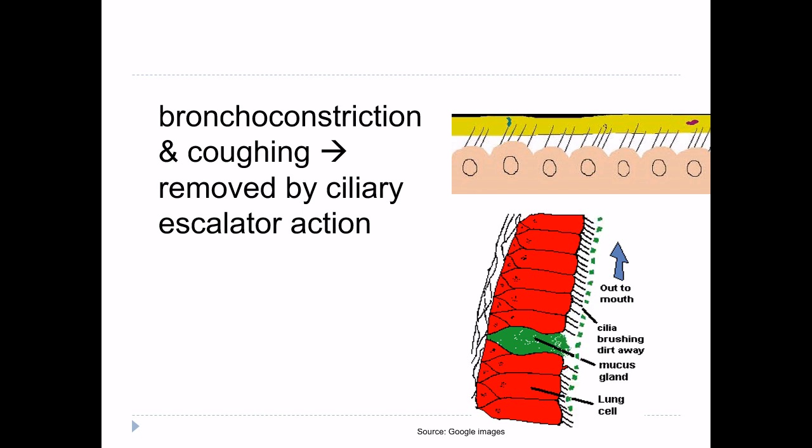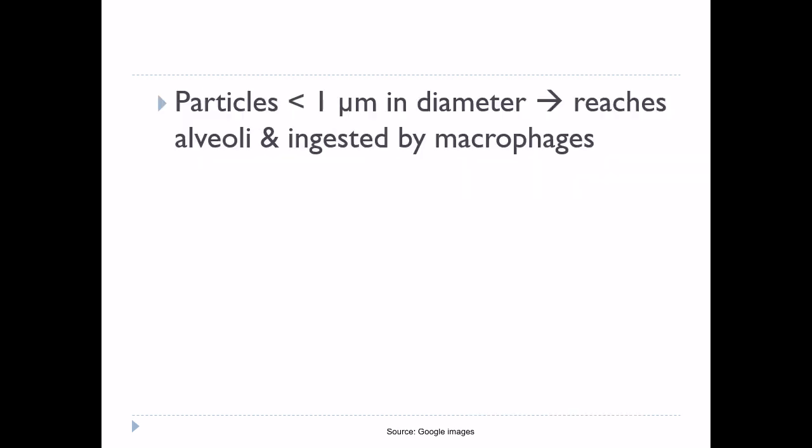These particles initiate bronchoconstriction and are removed by coughing and ciliary escalator action. The third mechanism: particles less than 1 micrometer in diameter reach the alveoli and are ingested by macrophages. Many particles smaller than 0.5 micrometers in diameter remain suspended in the alveolar air and are expelled by expiration.